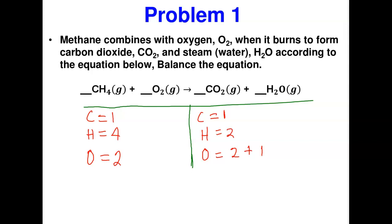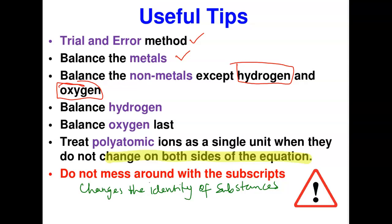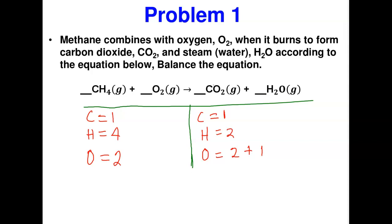Following the sequence, I balance carbon first, then hydrogen, then oxygen last. Carbon: 1 = 1, balanced. Hydrogen: 4 on the left, 2 on the right — I multiply H₂O by 2, putting a coefficient of 2 in front, giving four hydrogen on the right. But I've now messed up oxygen on the right. I need to fix it immediately.